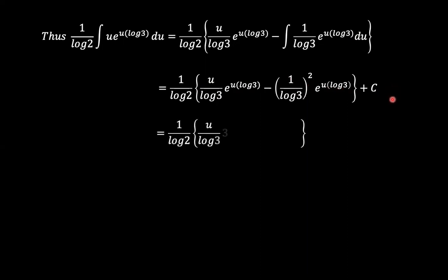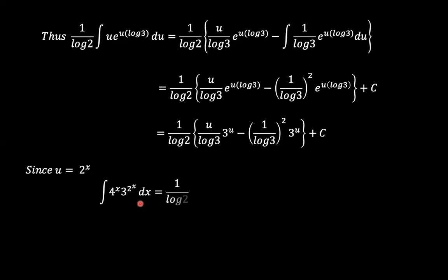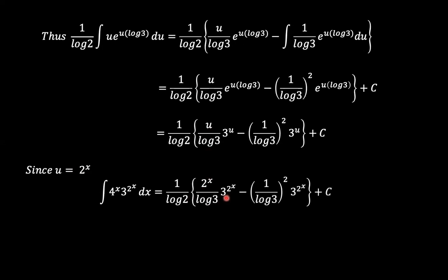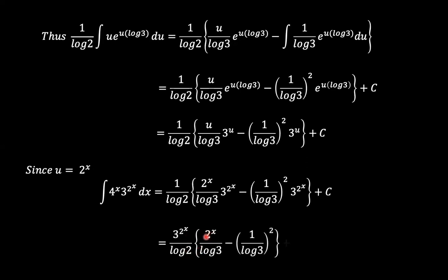A few things to simplify: we know e to the power (u·log3) is the same as 3 to the power u, so we substitute back. And since u equals 2 to the power x, our final integral is 1 over log2 times: 2^x over log3 · 3^(2^x) minus (1 over log3)² · 3^(2^x), plus the integration constant. Pulling out 3^(2^x), this simplifies to 3^(2^x) over log2 times (2^x over log3 minus (1 over log3)²), plus the integration constant. And this is the final answer.